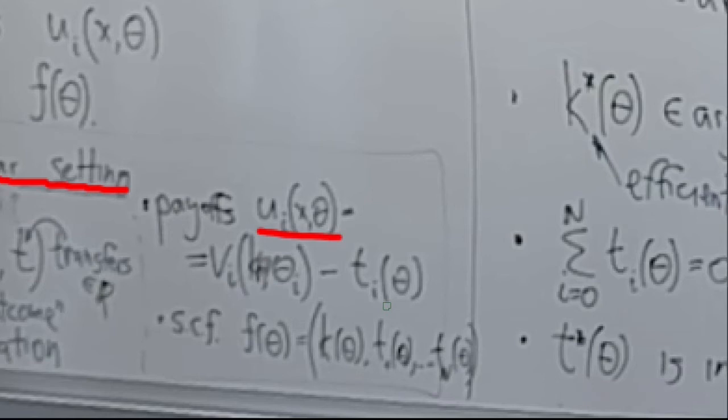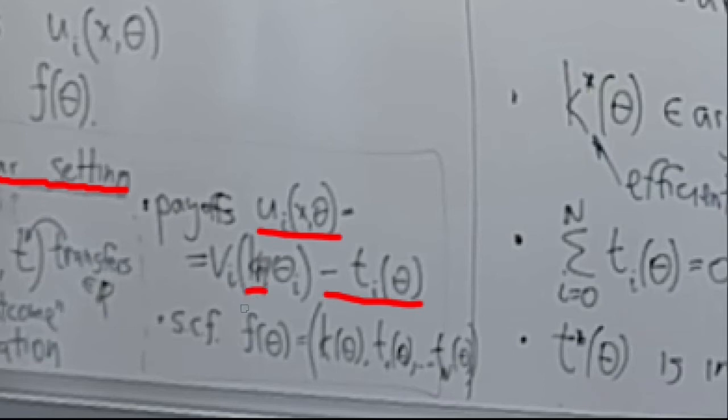This linearity assumption on transfers is actually quite powerful — it imposes a lot of structure on preferences. First, it assumes that players are risk neutral, meaning the marginal utility of money is constant (fixed at one here), and this marginal utility is not dependent on the size of the transfer, whereas with risk-averse agents this marginal utility would be decreasing. Furthermore, this marginal utility of money is the same across agents and their types, and does not depend on the allocation k being implemented.